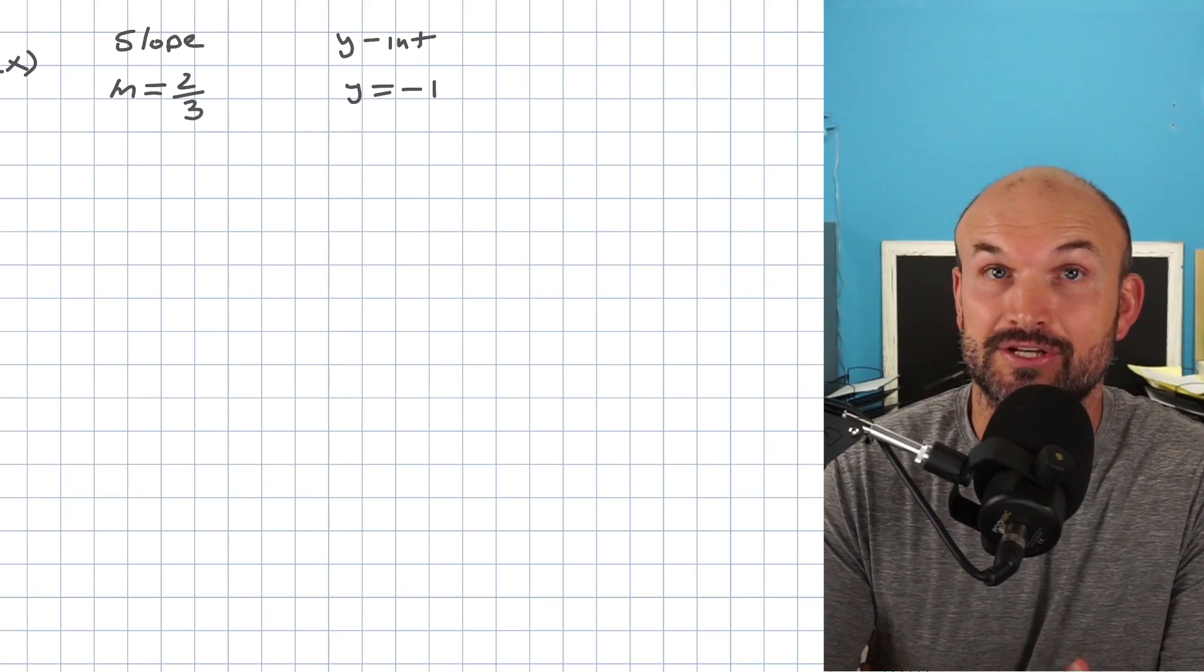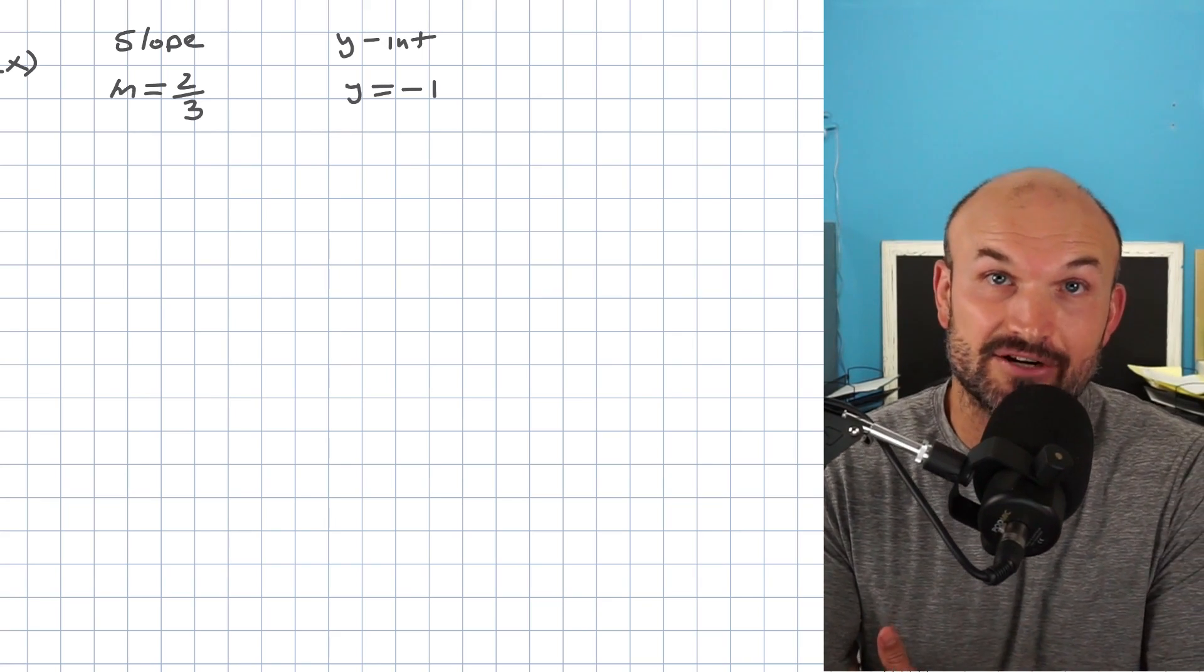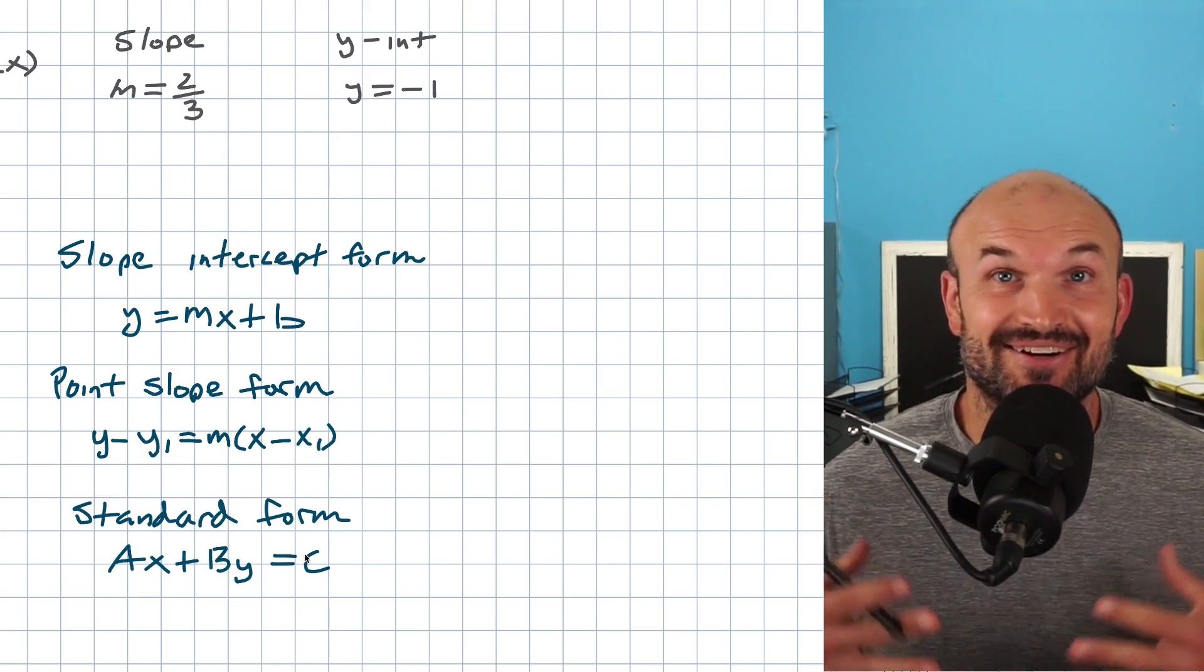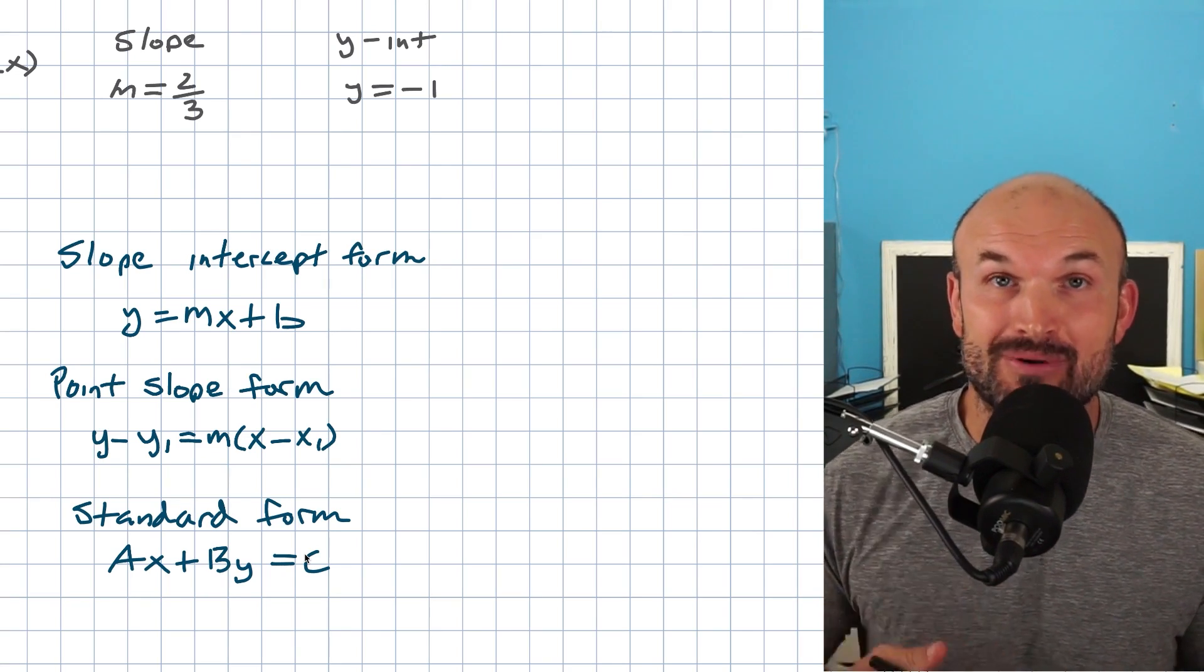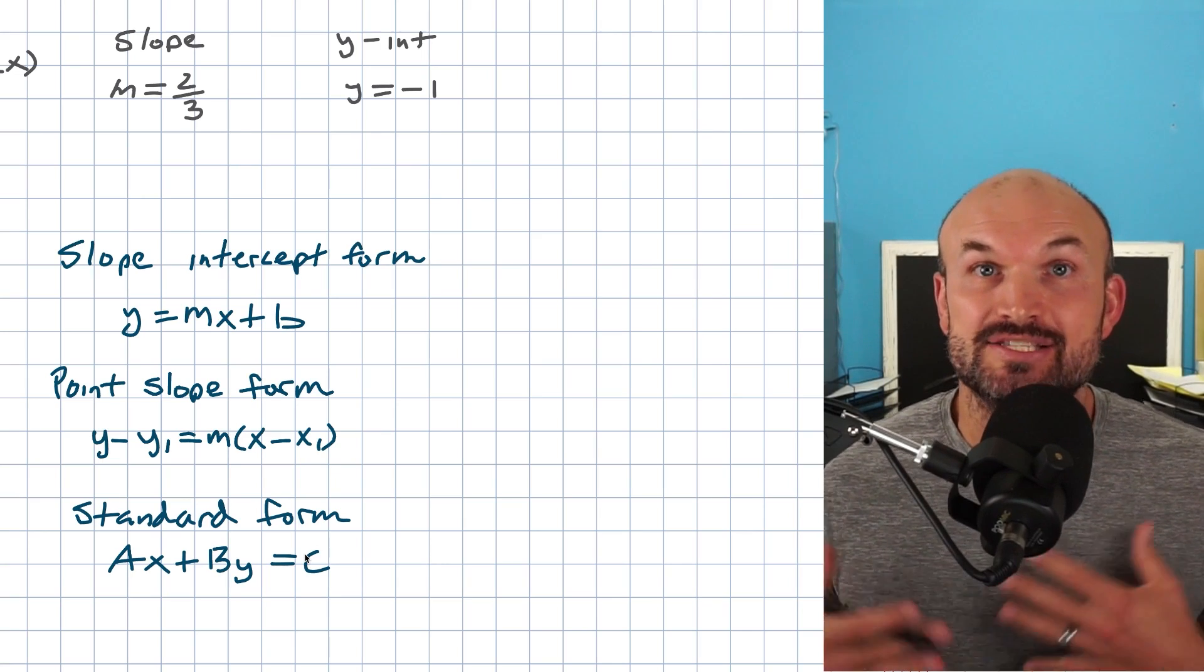We can use slope-intercept form, point-slope form, or standard form. But if you look at all these equations, you can see there are a lot of variables. The thing I love about slope-intercept form is you have m, which represents the slope, and b, which represents the y-intercept.